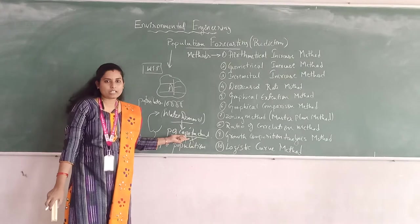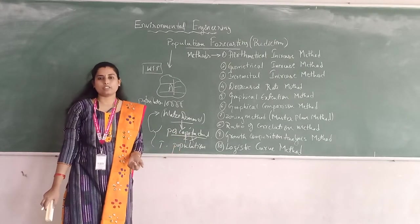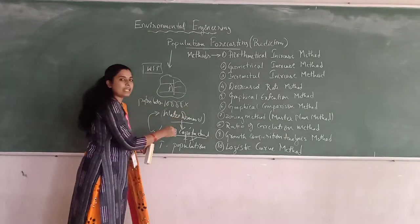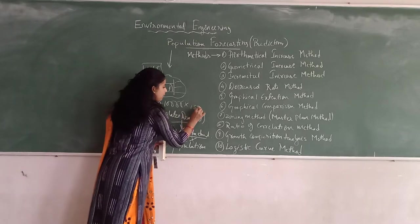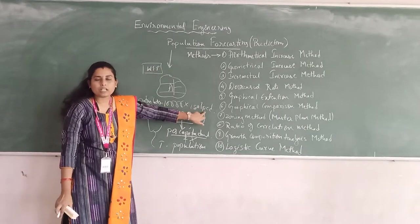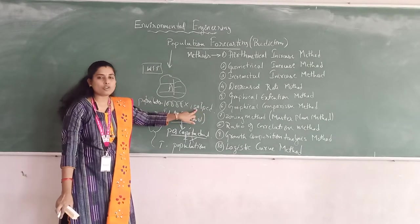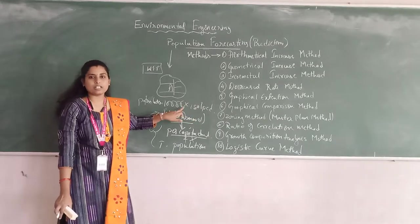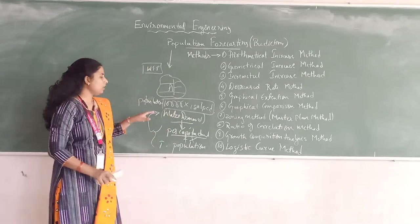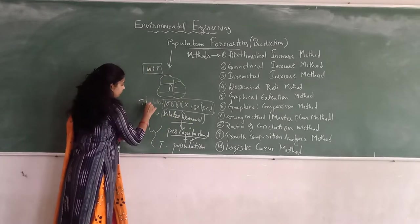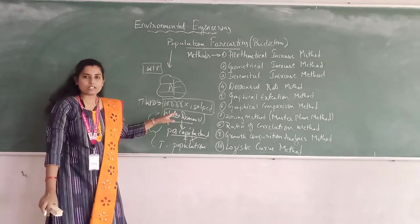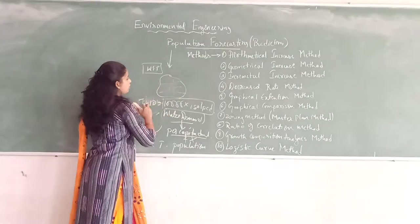After deciding the per capita demand, we will go for the calculation of the population. For the city, the population is 10,000. Let's assume the per capita demand is 180 LPCD — that is, Liters Per Capita per Day, meaning 1 litre of water is used per person. With the total population of 10,000, we are going to find the total water demand and design the water distribution system.